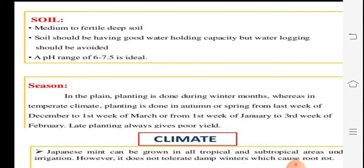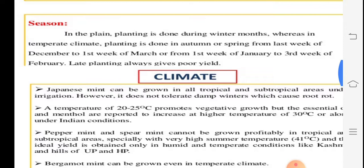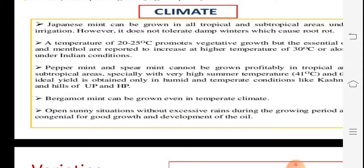The soil should have good water-holding capacity, but waterlogging must be avoided. The soil pH range should be 6 to 7.5 — near neutral to slightly alkaline or acidic. The main season is winter, specifically from the first week of December to March, which gives the best yield and production.